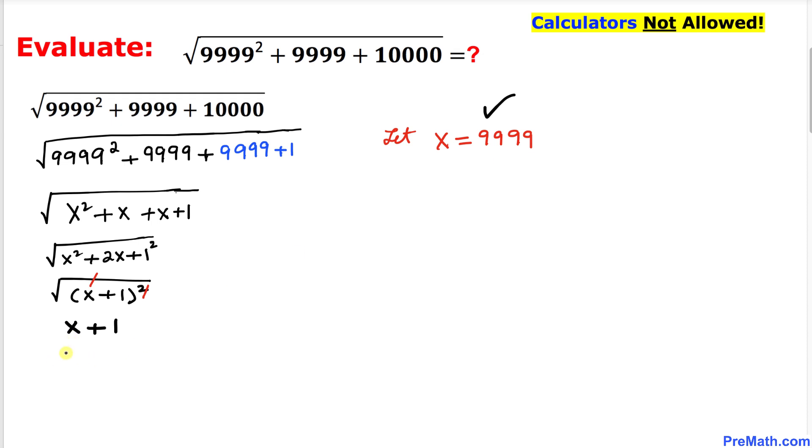Let's go ahead and replace this x by 9999 plus 1, and that is going to give us 10,000, and that's our answer.